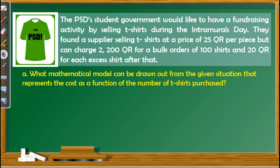Second problem: the PST's student government would like to hold a fundraising activity by selling t-shirts during the intramural. They found a supplier selling t-shirts at 25QR per piece, but charging 2,200QR for a bulk order of 100 t-shirts, and 20QR for each excess shirt after that. We are asked to find the mathematical model representing the cost as a function of the number of t-shirts purchased. The input is the number of t-shirts, and the output is the cost.